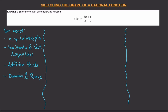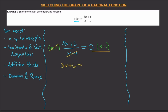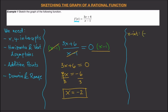For the x-intercept, y is equal to zero, so we set (3x + 6)/(x − 1) = 0. Multiplying both sides by (x − 1), we get 3x + 6 = 0. Solving: 3x = −6, so x = −2. The x-intercept is (−2, 0).